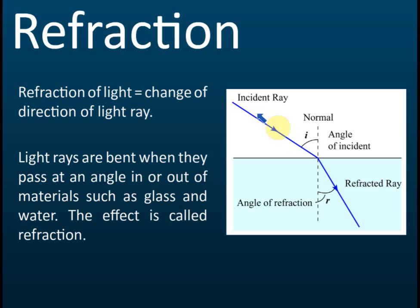And the angle between the incident ray and the normal is called the angle of incidence. So this I is the angle of incidence. And the angle between the refracted ray and the normal is called the angle of refraction, and it's denoted by the symbol R.